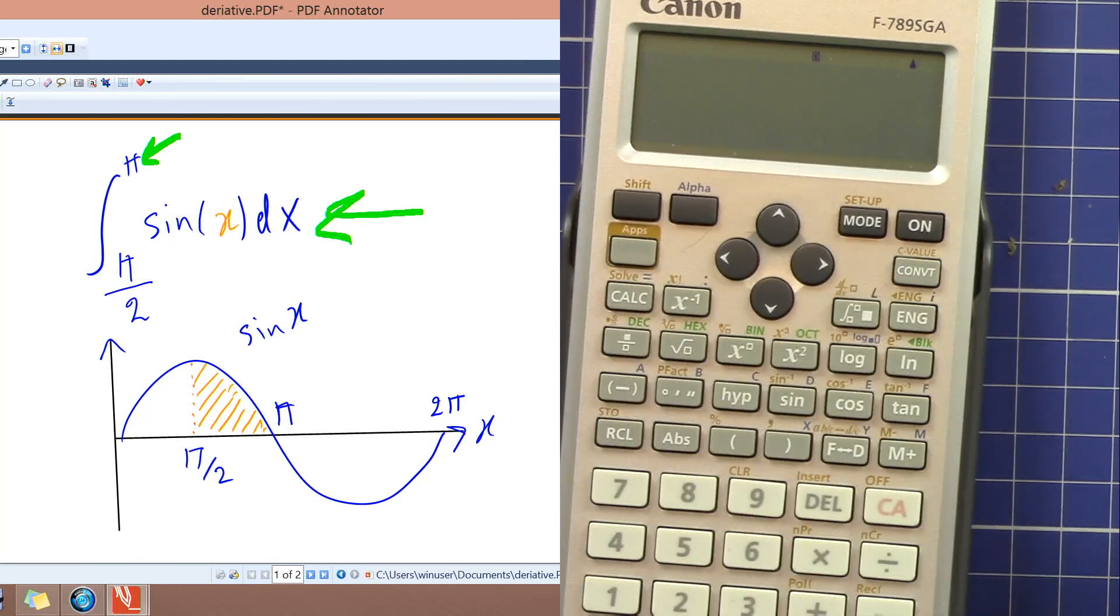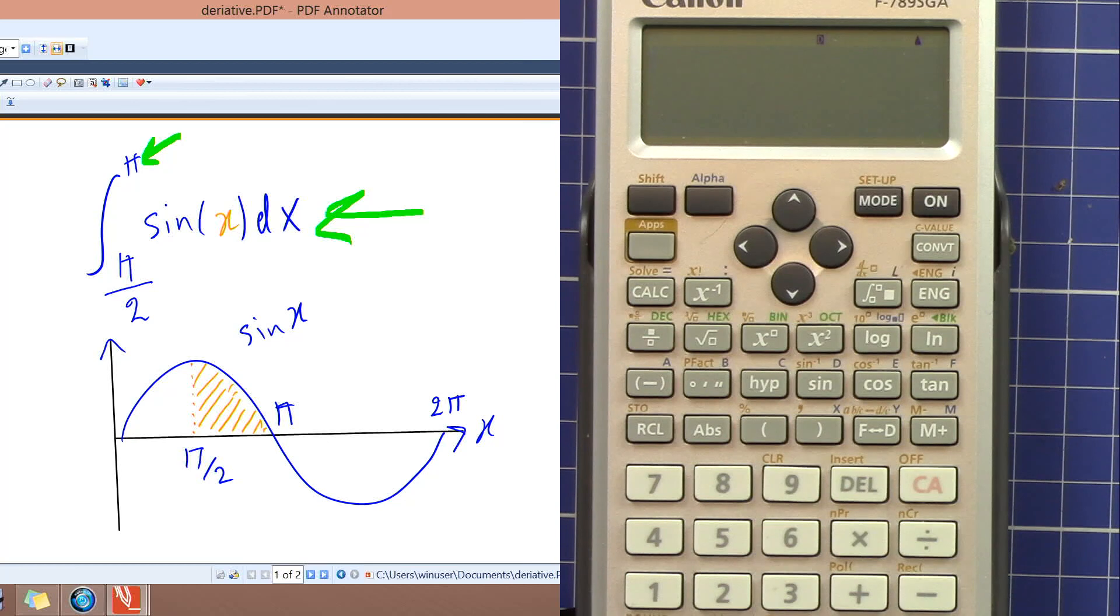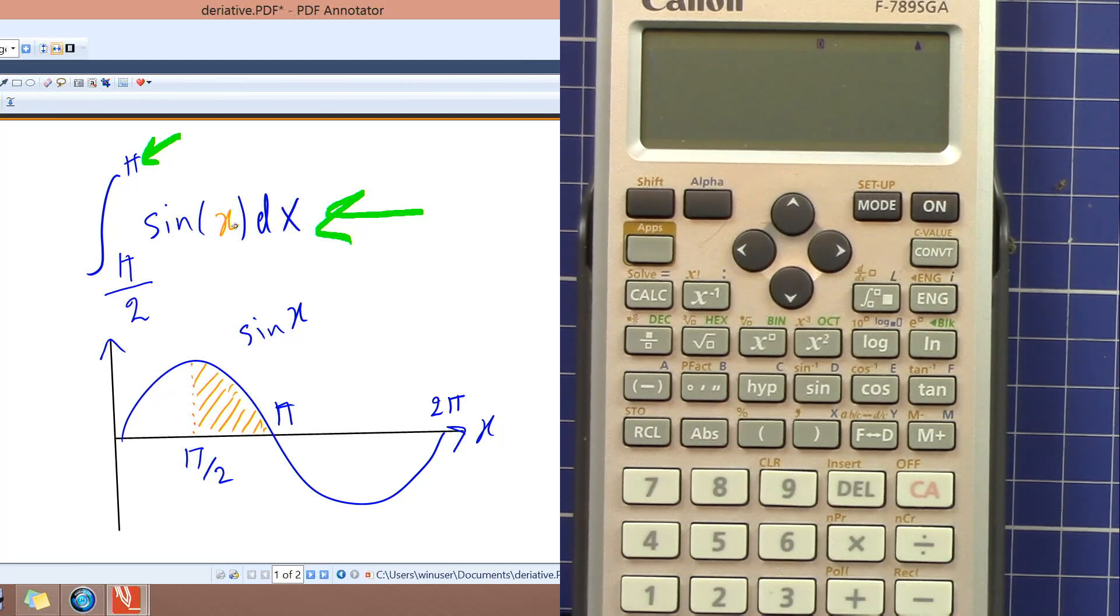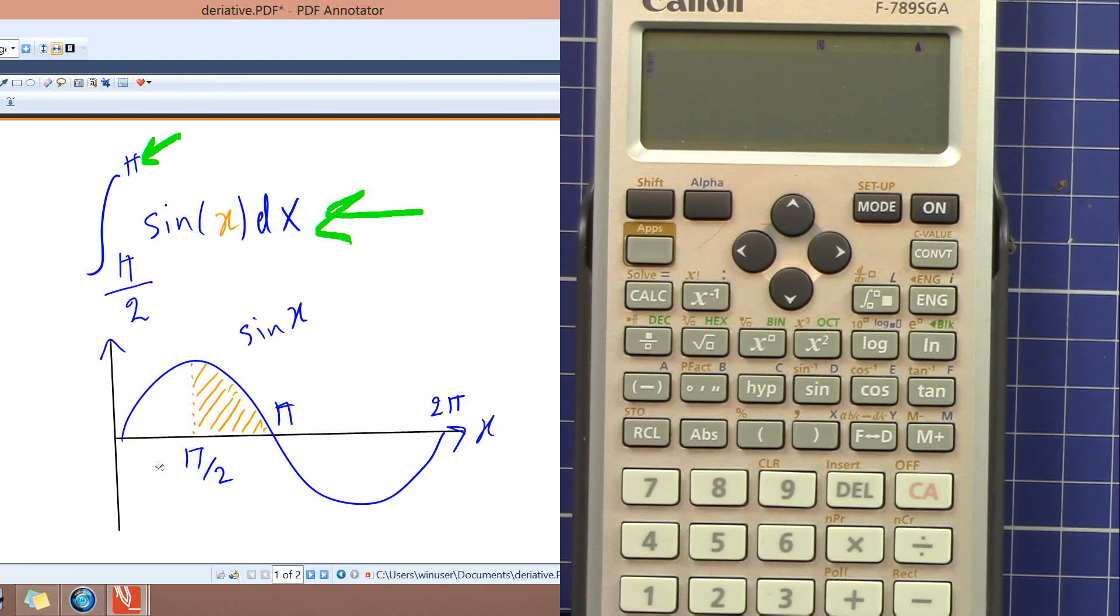So let's get started by evaluating this integral of sine X dx from pi over 2 to pi. As you can see here, when you evaluate the integral you are getting actually area under the curve. So we want to get from pi over 2 from here to pi and we want to find that area.